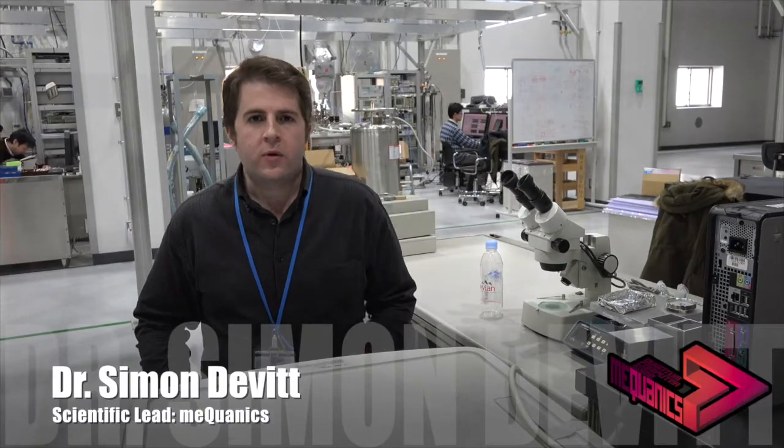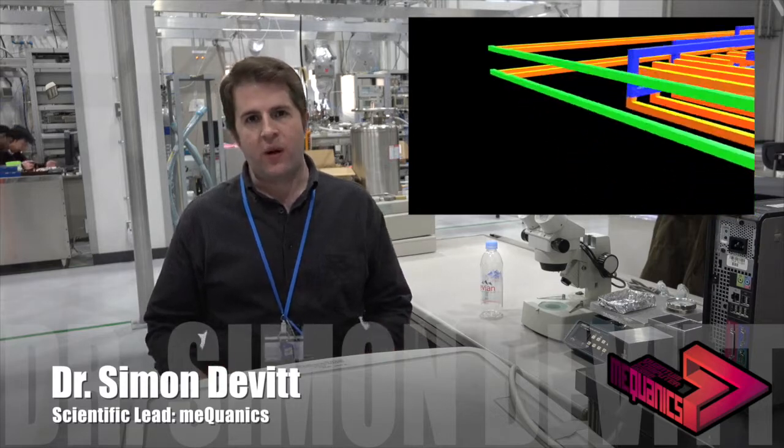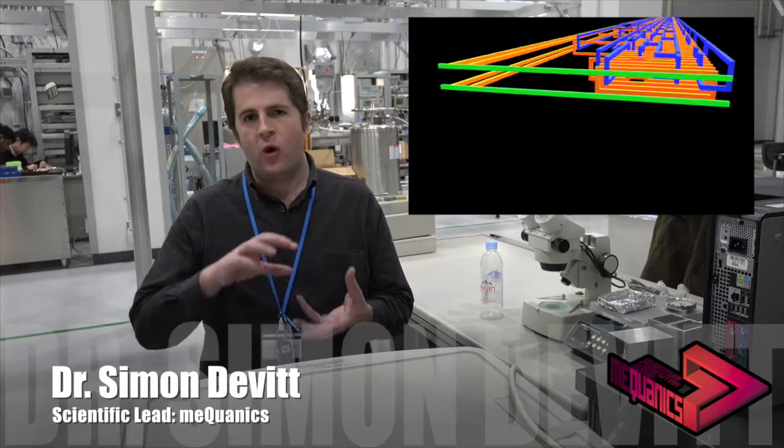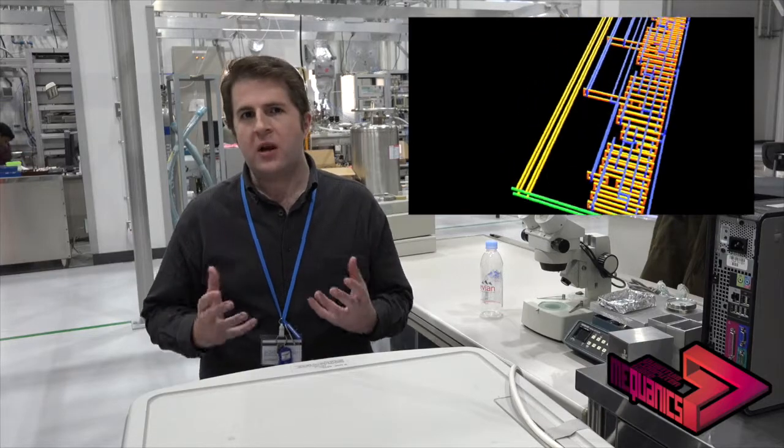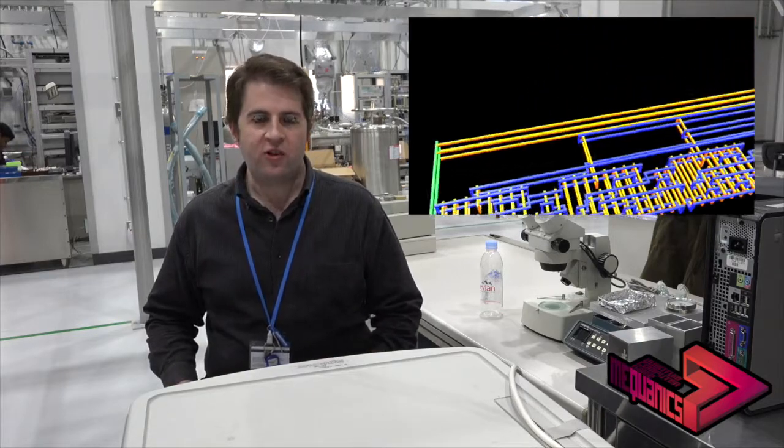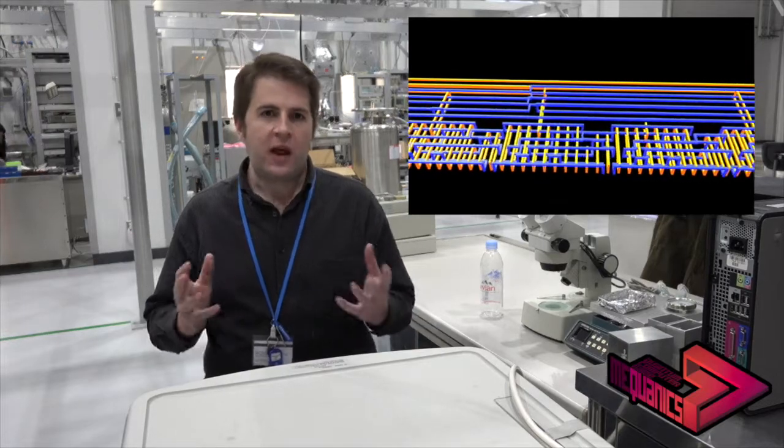In this model of quantum computing, the quantum circuit itself is actually a complicated three-dimensional puzzle, with pieces of the puzzle winding around each other like a ball of string. It's this weaving and braiding that actually performs the computation. And its physical size tells us how many qubits and how much time we require in order to perform the computation.